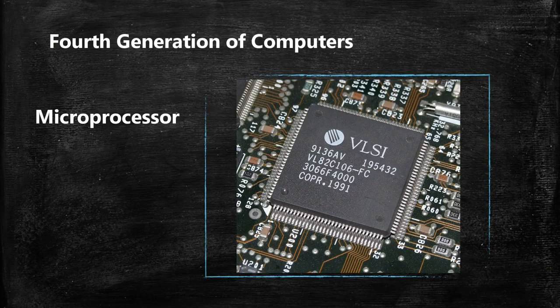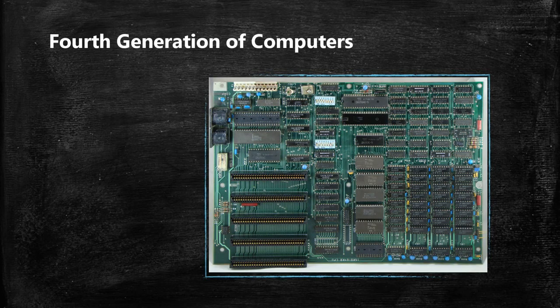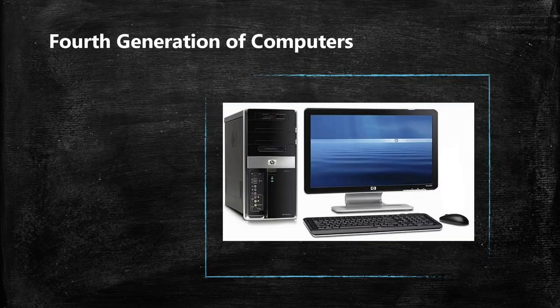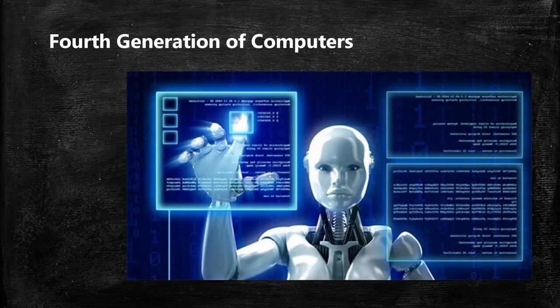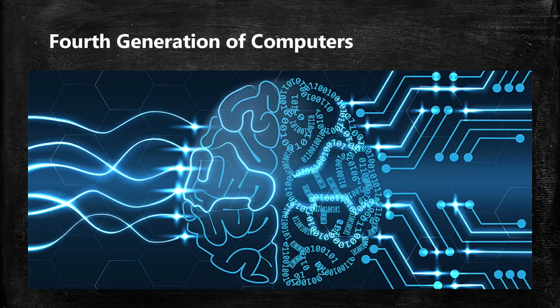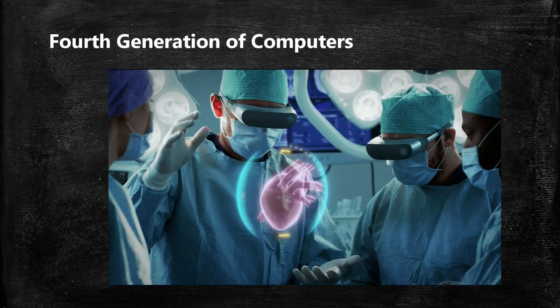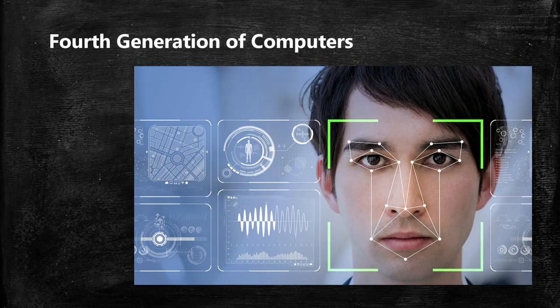The fourth generation of computers began in 1972 and lasts to the present. Integrated chip technology was made even smaller, giving rise to microprocessors, which could accommodate thousands of integrated circuits, making computers smaller yet faster. The fifth generation belongs to the present era and extends into the future. These are the smartest computers, capable of multiple relevant tasks simultaneously, based on artificial intelligence and machine learning. Concepts such as virtual reality, voice recognition, and face recognition blur the line between virtual and real. These computers are being developed to process and respond to natural languages and to learn and organize themselves.